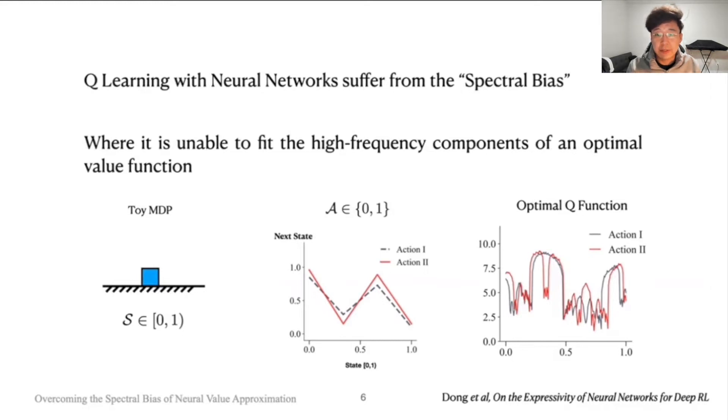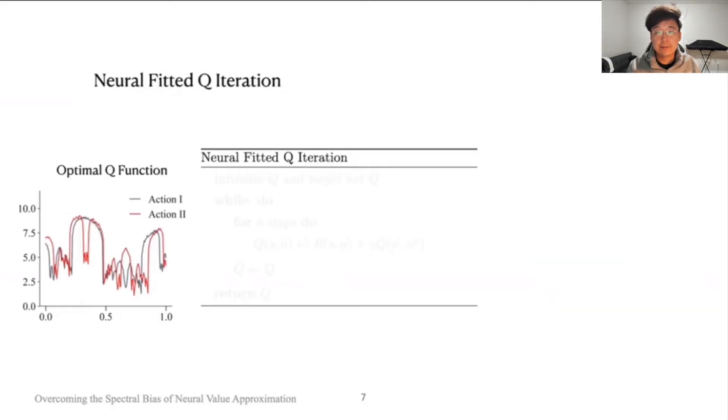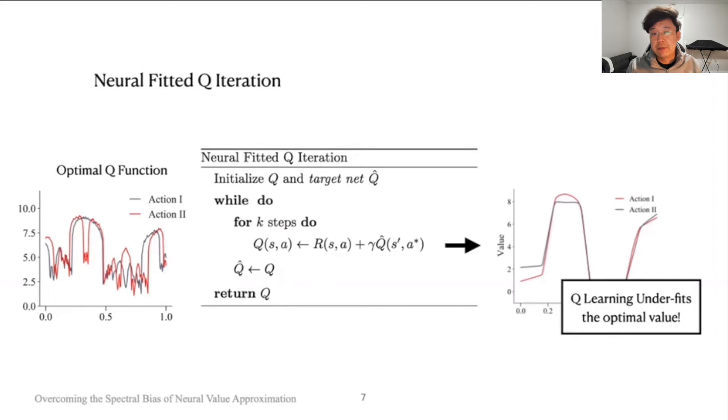The optimal Q function is actually quite complex. Now if you run fitted Q iteration on this MDP problem, neural fitted Q iteration produces a very rough approximation that significantly underfits the optimal Q function.